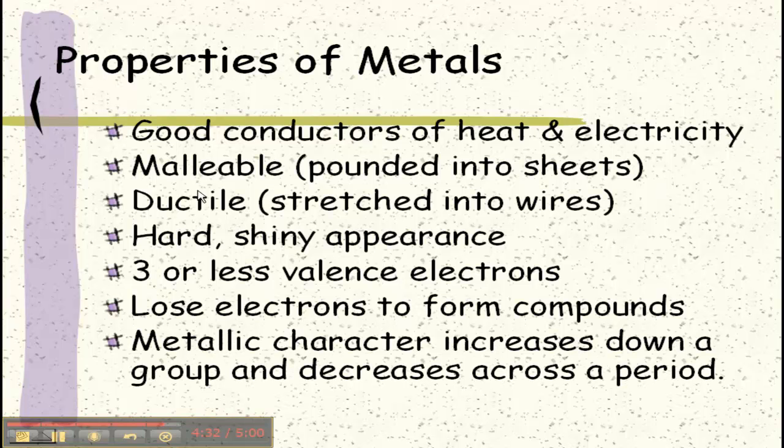Metallic character is going to increase as you go down and across. The greatest metallic character is going to be down near francium on the bottom left-hand side of the periodic table.